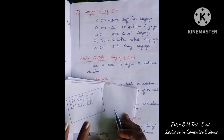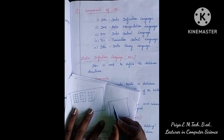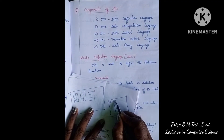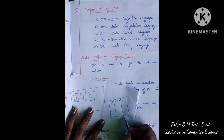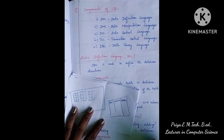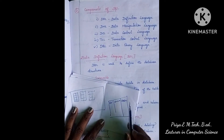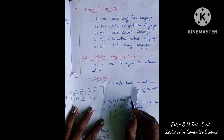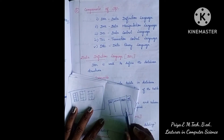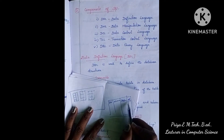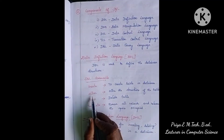Another DDL command is ALTER. For example, if you create a table with admission number and name, and later want to add a phone number column, you can use ALTER to change the table structure — add extra columns to the existing table. That command is called the ALTER command.